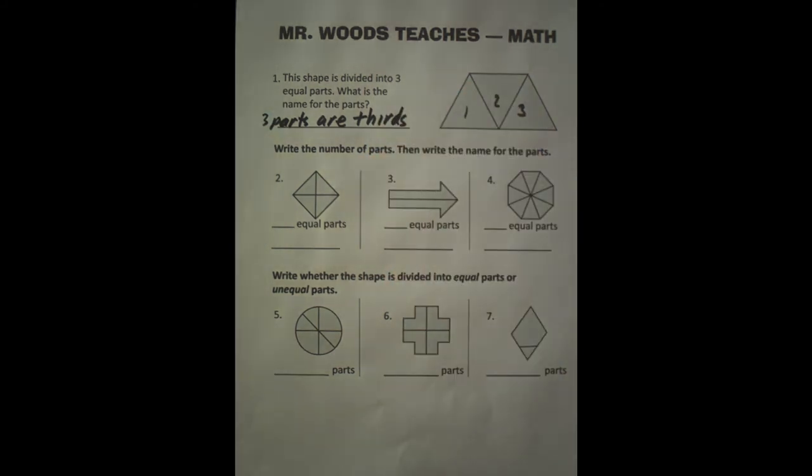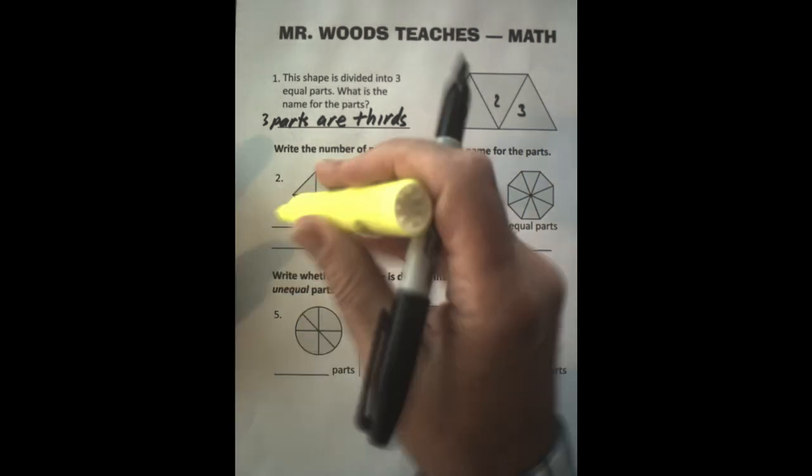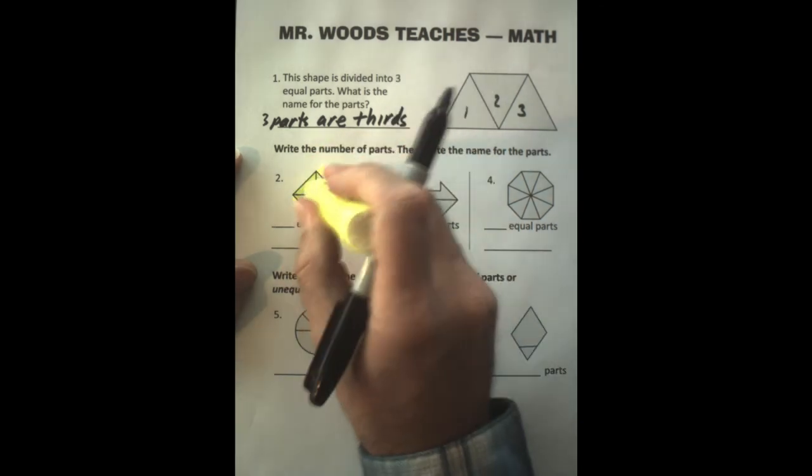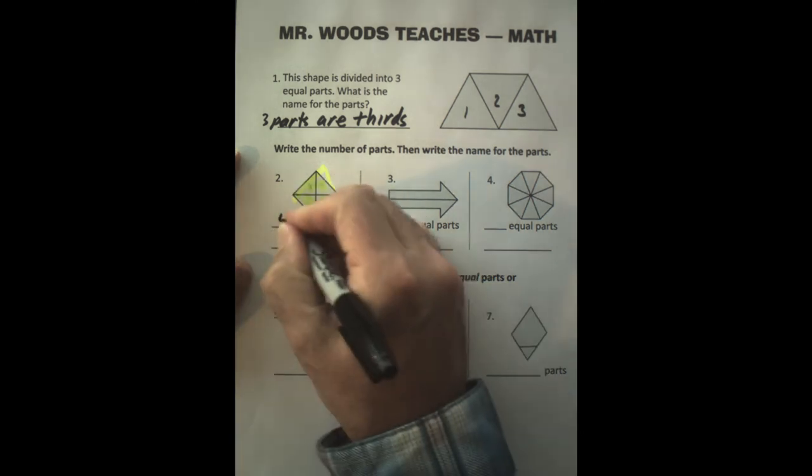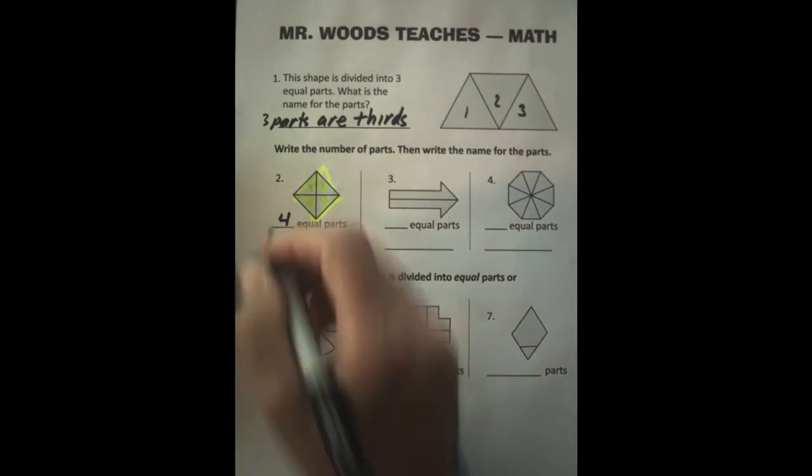Let's see what we can do for the next few here. Number two here we have this shape. And it has one, two, three, four equal parts. And remember four starts with an F. So what comes the name for this? It's fourths.